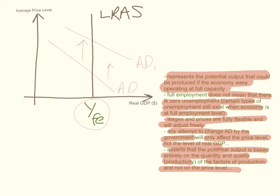They believe that the only way long-run aggregate supply or the full employment level of output is determined is by the quantity, quality, and productivity of the factors of production — and not the price level.